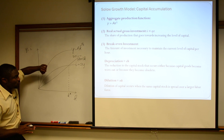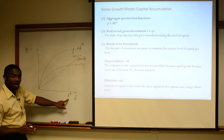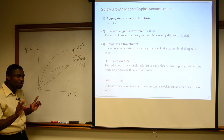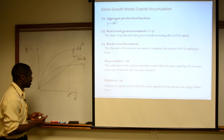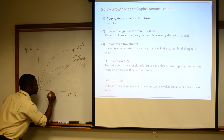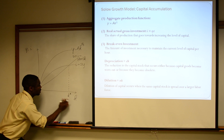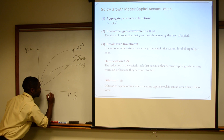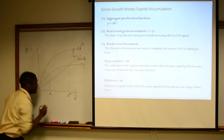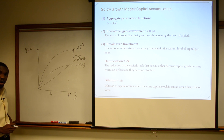Let's illustrate why we describe this as our equilibrium. Let's assume, for some reason, that we're starting to the left of K star — we have perhaps our capital initially at K1.